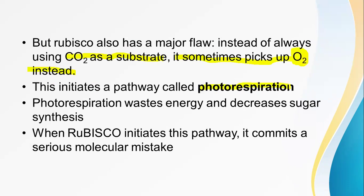The pathway in which Rubisco uses oxygen instead of carbon dioxide is the process of photorespiration. Photorespiration is essentially an energy-wasting process that decreases sugar synthesis, because in the Calvin cycle, carbon dioxide is being displaced.